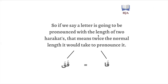So if we say a letter is going to be pronounced for the length of two harakahs, that means twice the normal length it will take to pronounce it. For example, qaa here is going to be elongated the length of two harakah — meaning twice the normal length. Which would be: qaa, qaa. So the length of elongation for qaa is two harakah — the length it takes to say the letter qaa two times. And why is it two harakah? Because the alif here, as we'll cover later, is creating a madd tabi'i, which means you elongate the letter two harakah — twice the length it would normally take to pronounce it.